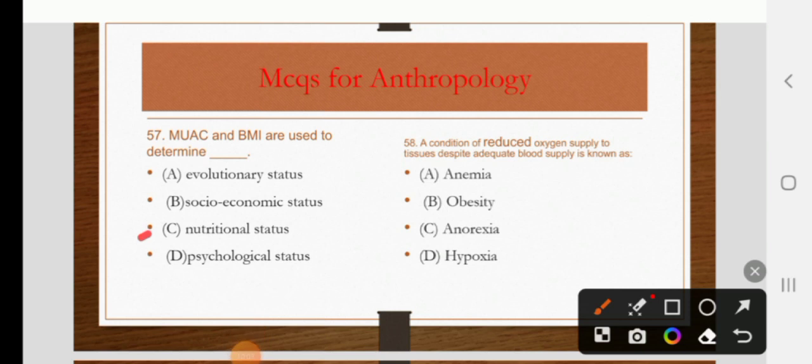A condition of reduced oxygen supply to body tissues despite adequate blood supply is known as anemia, obesity, anorexia, or hypoxia. The right answer is hypoxia.